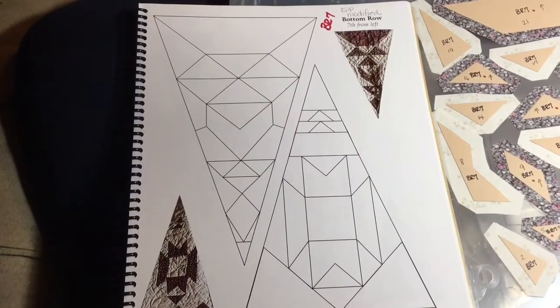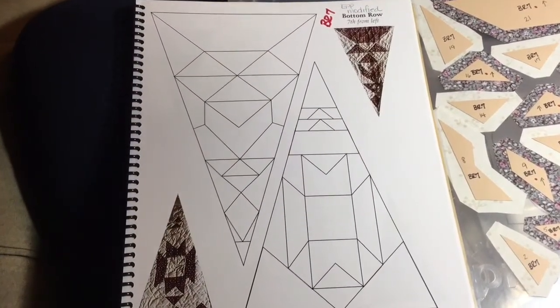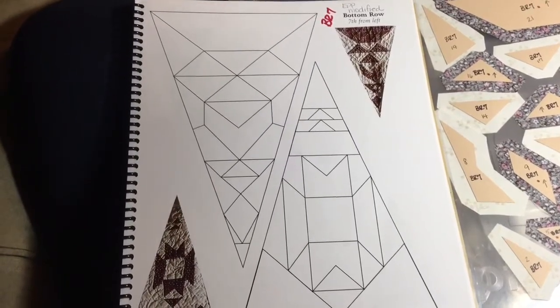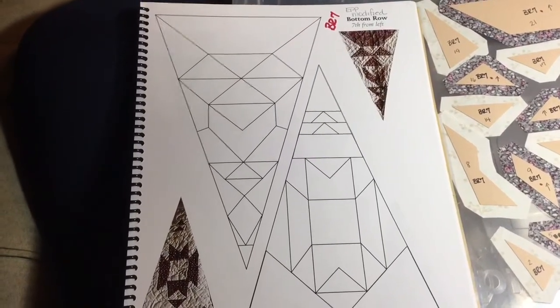Now we are up to BR7, and the 7th triangle in the bottom row is the absolute center, so we are in the center of the third side of triangles.